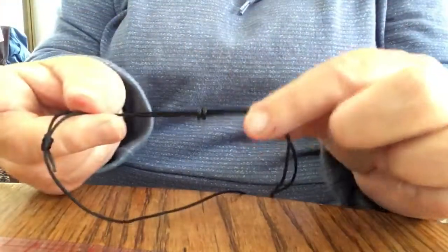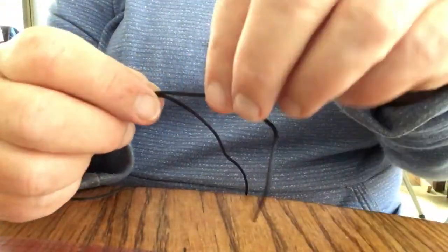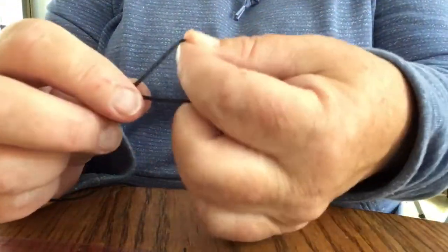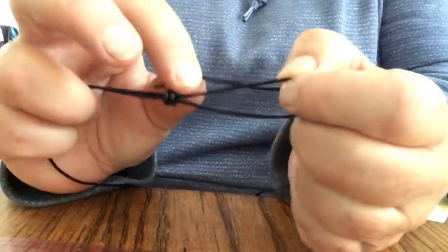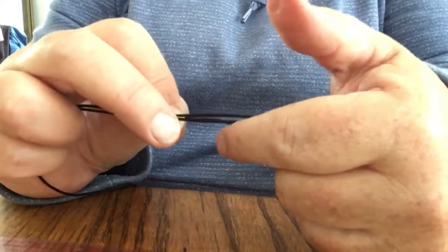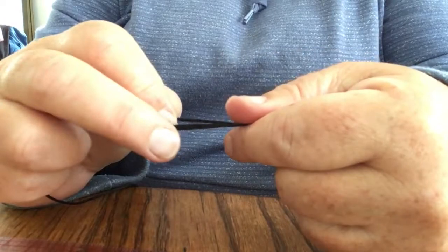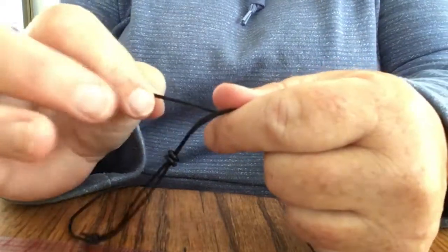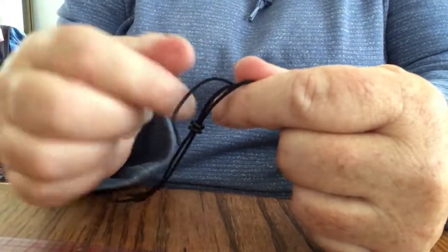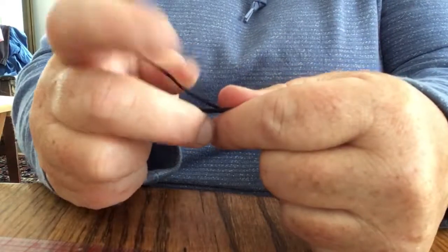Now turn the cord around and do the same thing with the other side. Again, about two inches of tail, holding the end of the loop against the other cord as you go around.